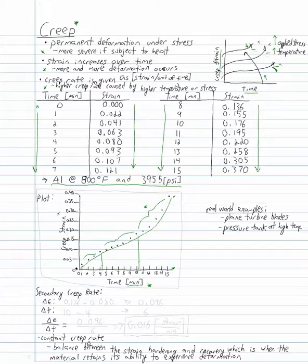What we're interested in is the secondary creep rate, which is a constant creep rate. This is because there's a balance between the strain hardening and the recovery. Recovery is when the material retains its ability to experience deformation.